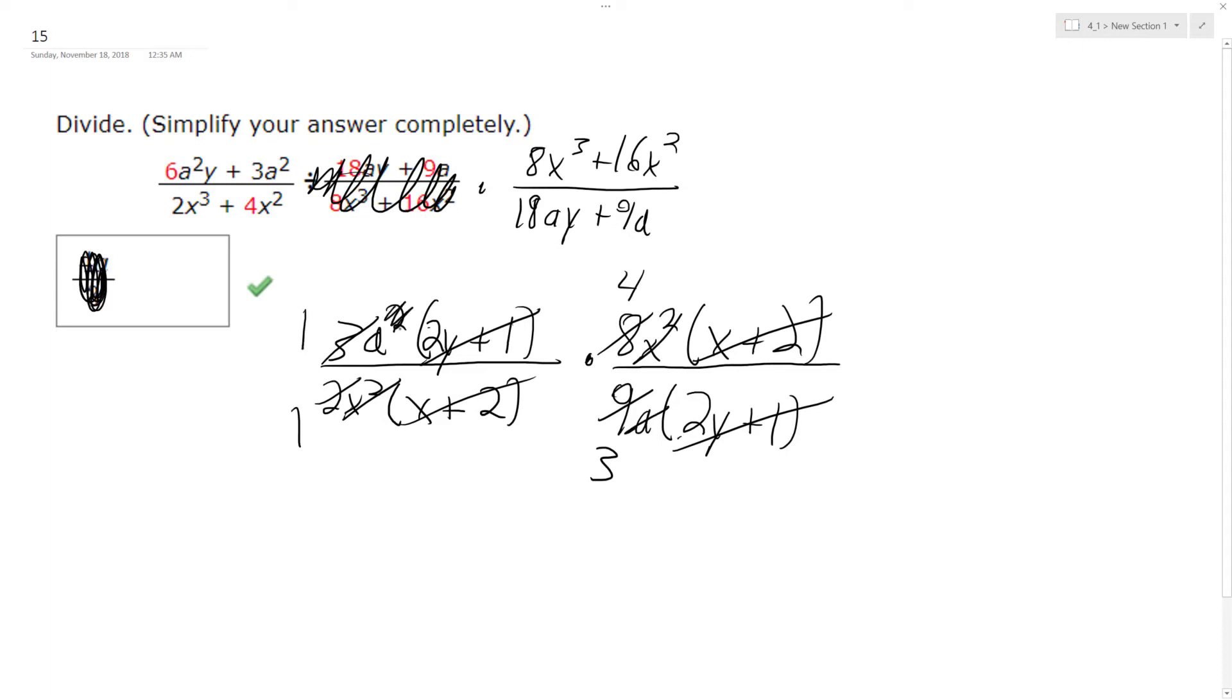And then, these cancel out, this goes to just a, and I'm left with 4a over 3.